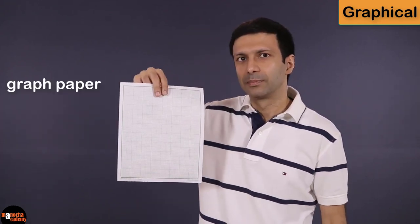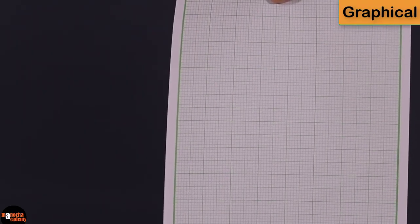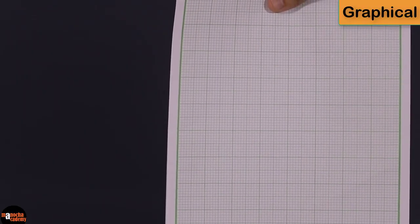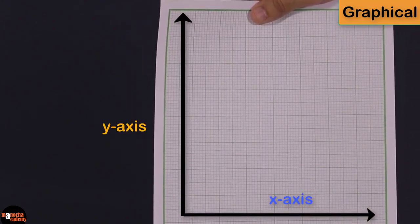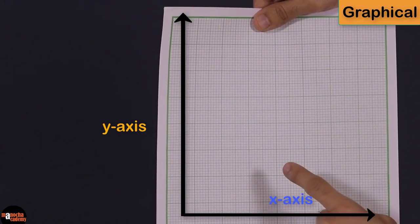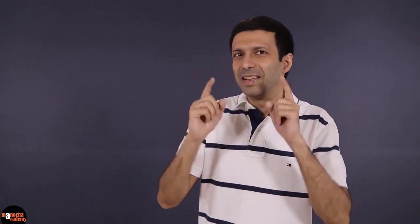Now let's take a look at the graphical method. For the graphical method, you need some graph paper. Now you may already know about graphs. First thing you need to do is draw the two axes, the x axis and the y axis. And then we'll try plotting the two equations on the graph here. So are you ready to do some fun graphical stuff here? Let's start.